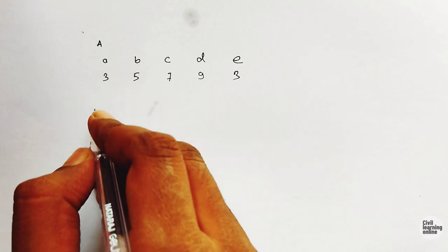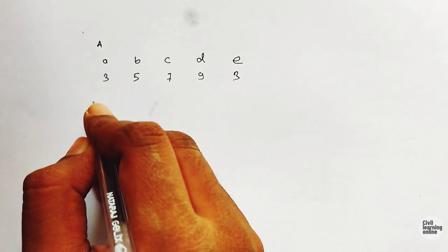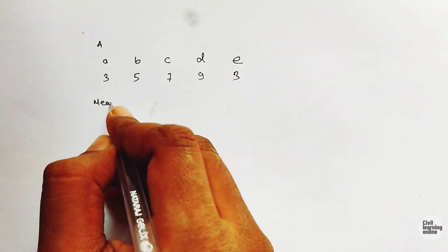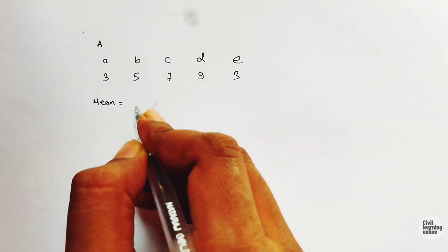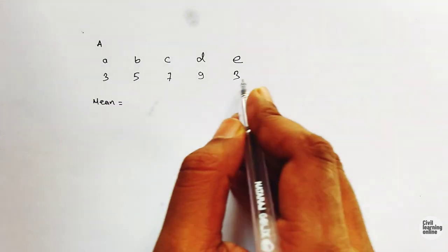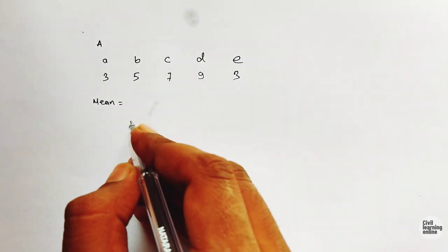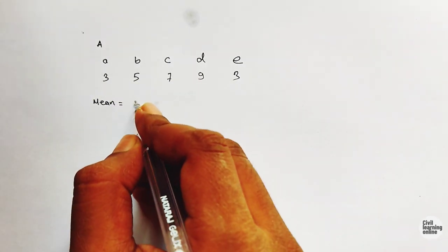To calculate mean, we take the sum of the durations of all activities divided by the number of activities.